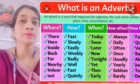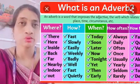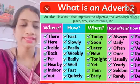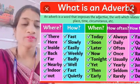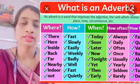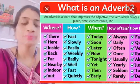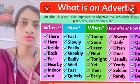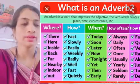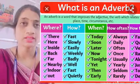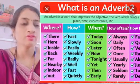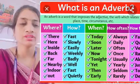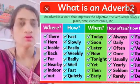Next is 'how' — matlab koi bhi action kaisa hua hai. That is calmly, beautifully, excitedly, happily, joyfully, sadly, sloppily, etc. Next is 'how often' — kitni baar hota hai kaam, ya kitni baar ho chuka hai. Like always, daily, frequently, never, once, rarely, seldom, sometimes — yeh saare words 'how often' ki category mein aate hain.